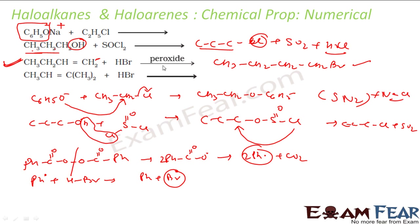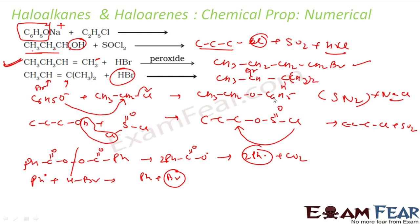Without peroxide, HBr addition follows Markovnikov's rule. Br adds to the more substituted carbon and H adds to the less substituted carbon, giving 2-bromo-2-methylbutane.